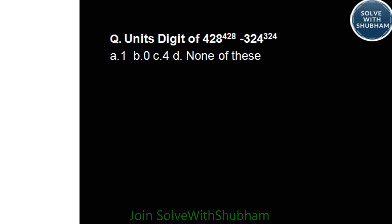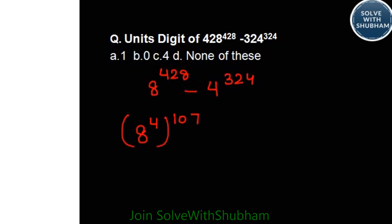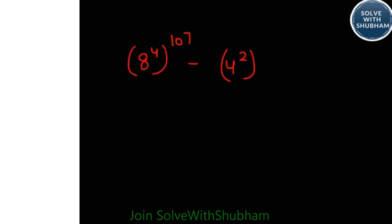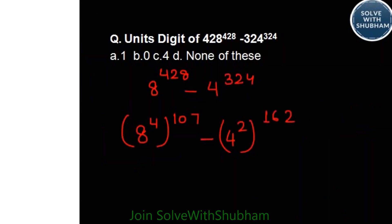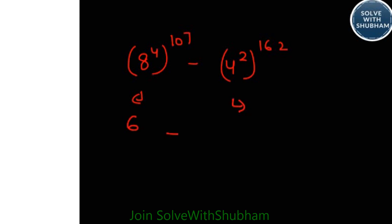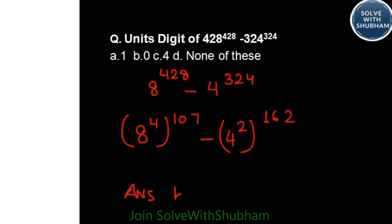Find out the unit's digit of 428 to the power 428 minus 324 to the power 324. We need the unit digit of 8 to the power 428 minus 4 to the power 324. Cyclicity of 8 is 4; dividing 428 by 4 gives remainder 0, so 8 to the power 428 ends with 6. Cyclicity of 4 is 2; dividing 324 by 2 gives remainder 0, so 4 to the power 324 ends with 6. Therefore 6 minus 6 equals 0. The answer is option B, 0.